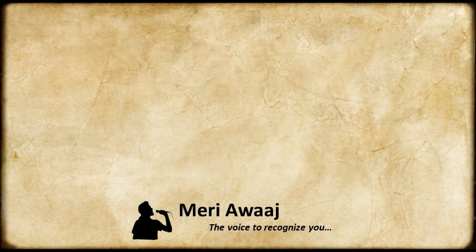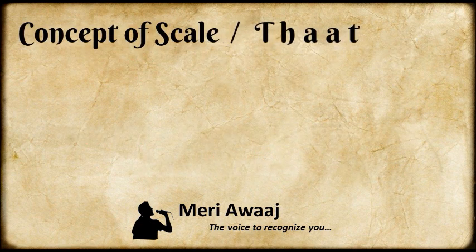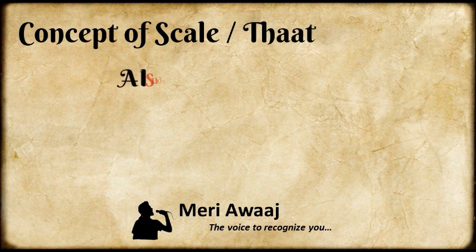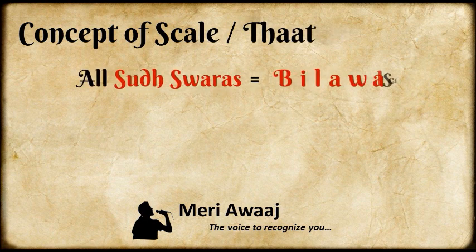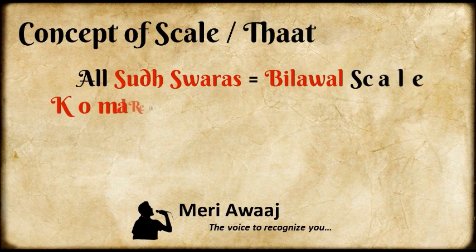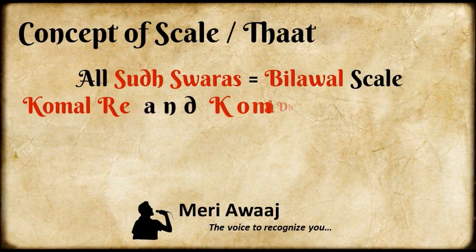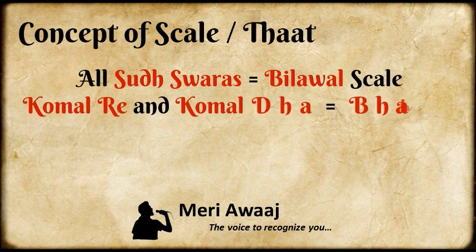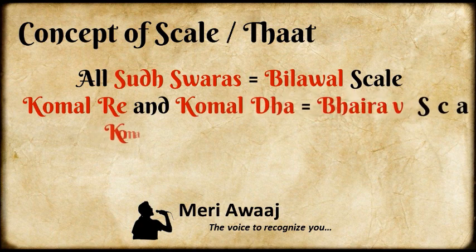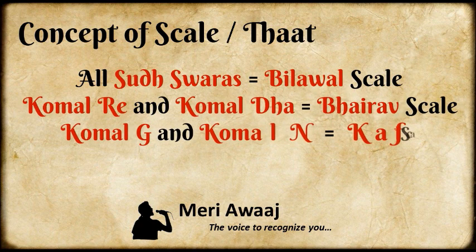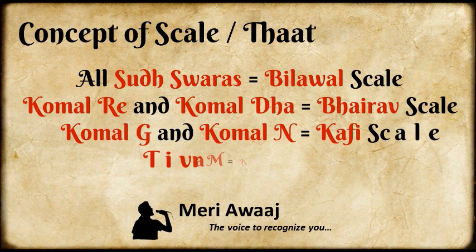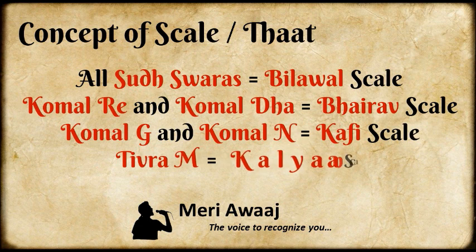Taking all Shuddha Swaras, we get Bilawal scale. Taking Komal Re and Dha, we get Bhairav scale. And with Komal Gha and Ni, we get Kafi. And with Tevra Ma, we get Kalyan scale.